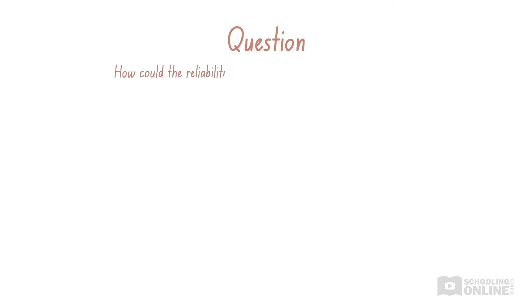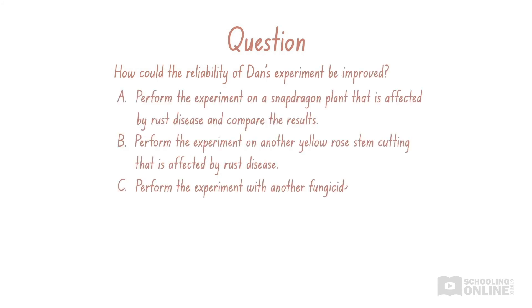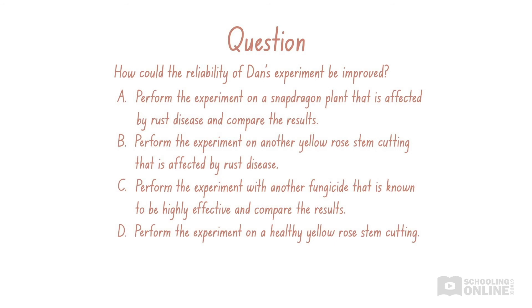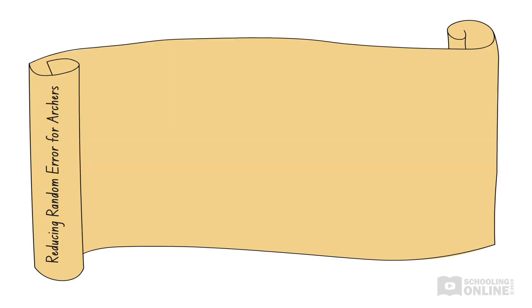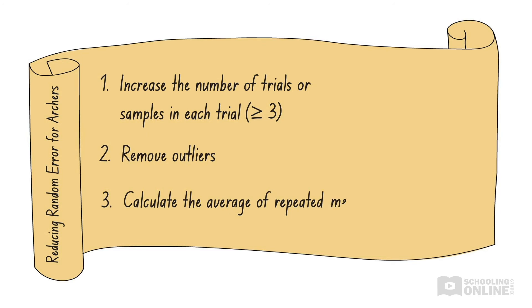How could the reliability of Dan's experiment be improved? Pause here to think about your answer. Remember, there are three main ways that we can improve reliability. By repeating experiments, removing outliers, and calculating the average of repeated measurements.